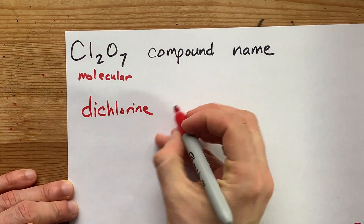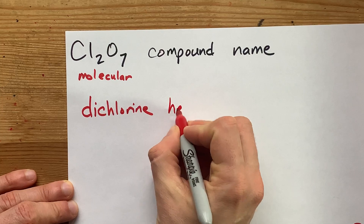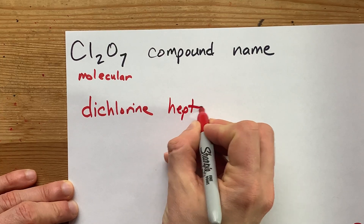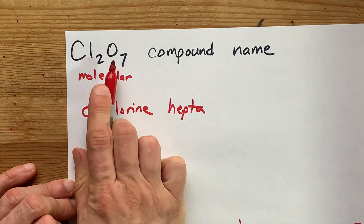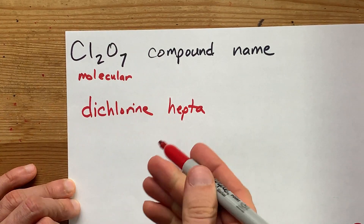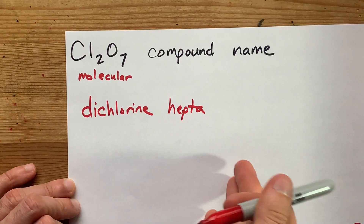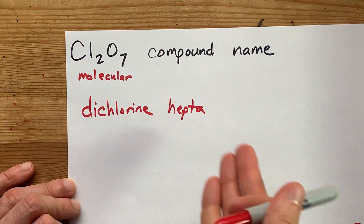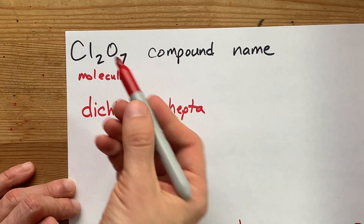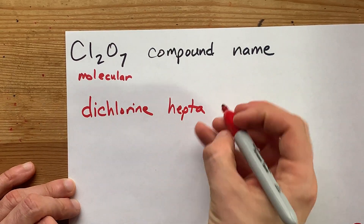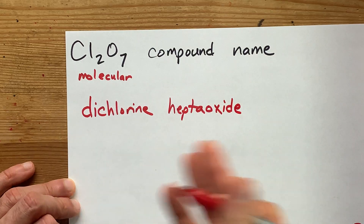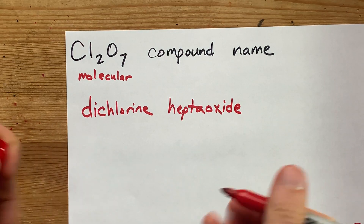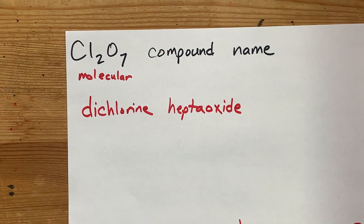Seven has a prefix of 'hepta', and then the second element needs to have its ending converted to 'ide', so oxygen becomes oxide — like carbon dioxide, which you've heard of.